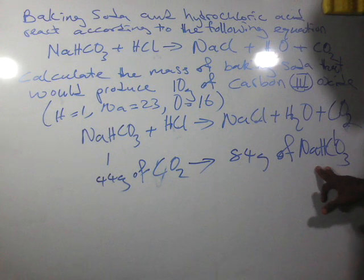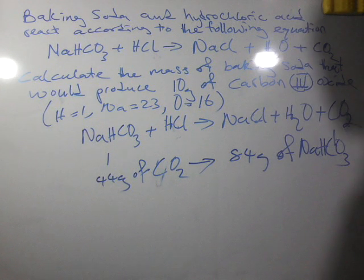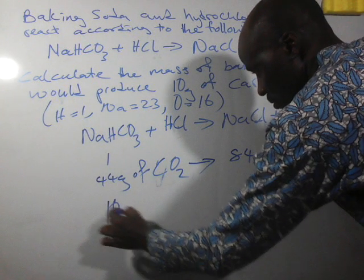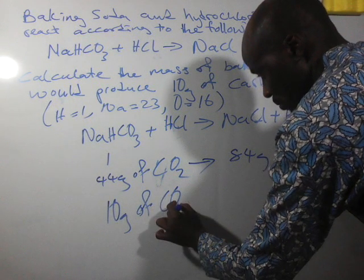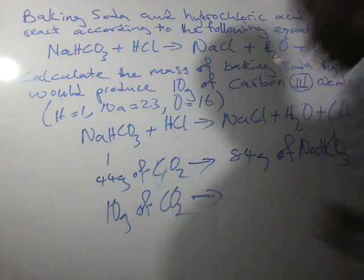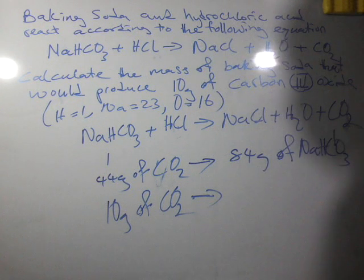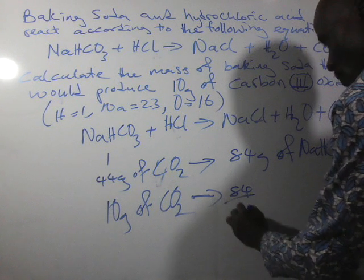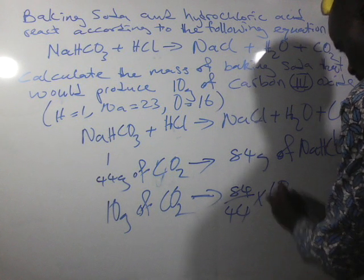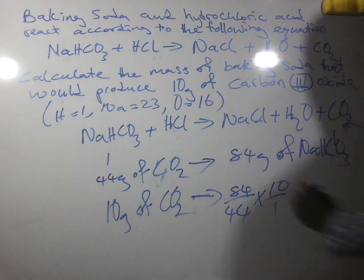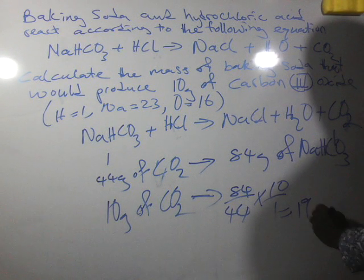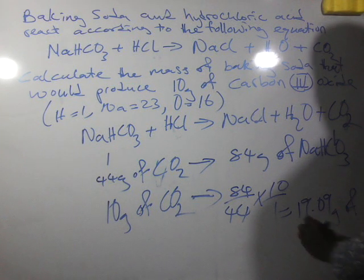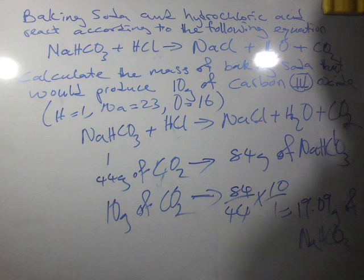So in that case, if we have 10 grams of carbon dioxide to produce, what we need is 84 divided by 44 times 10, which gives us 19.09 grams of sodium hydrogen carbonate — our baking powder.